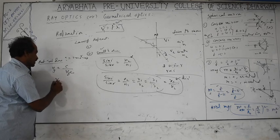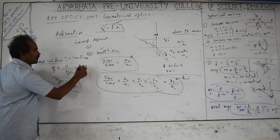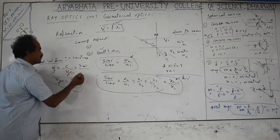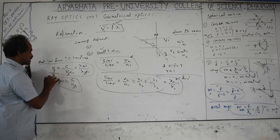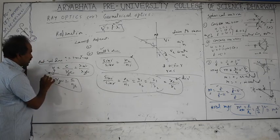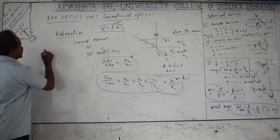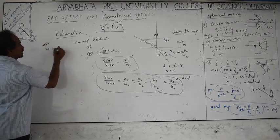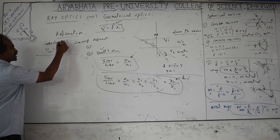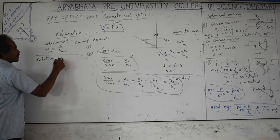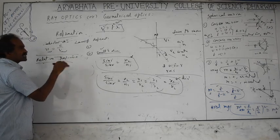Since c = f·λ and frequency f is constant, λ_vacuum / λ_medium = n_medium. The refractive index of air (n_air) is approximately 1. Absolute refractive index compares the speed of light in a medium to speed in vacuum. Relative refractive index involves two different media (not vacuum): for example, n_glass relative to n_water is n_glass/n_water = v_water/v_glass, since both absolute indices have c in the numerator and it cancels.